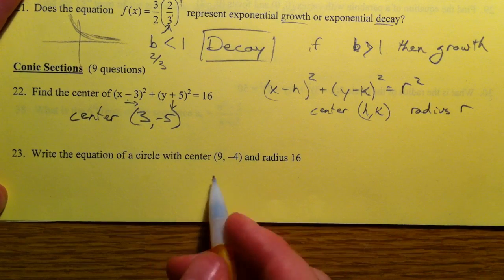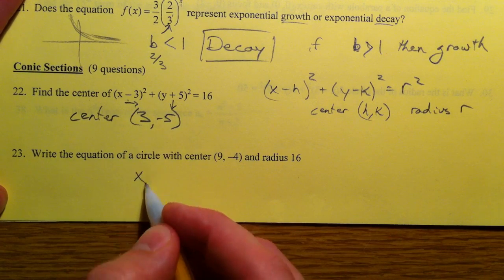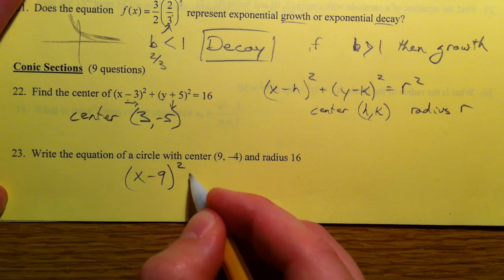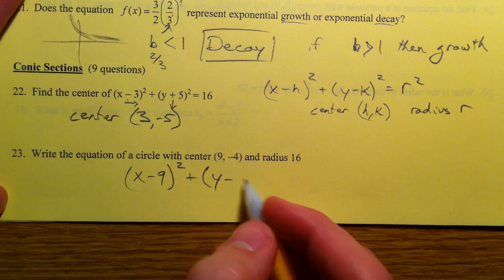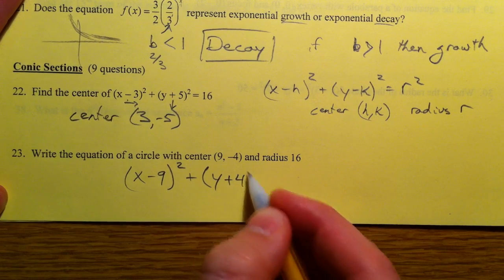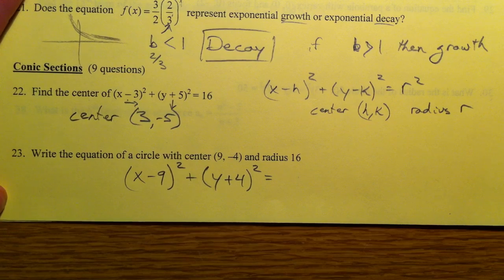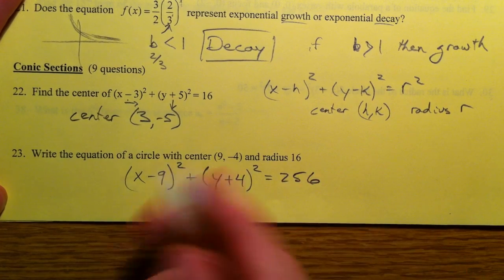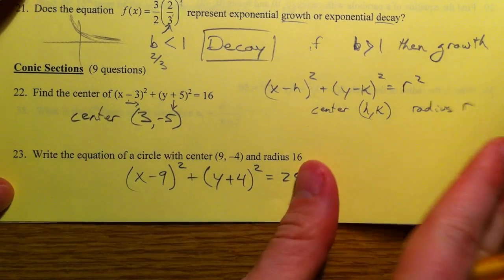Alright, the equation of the circle was the center at 9, so x minus 9, x minus the h squared, y minus the negative 4, so it ends up being y plus 4 squared equals 16 squared, which is 256. And then you're done. So that's circles.